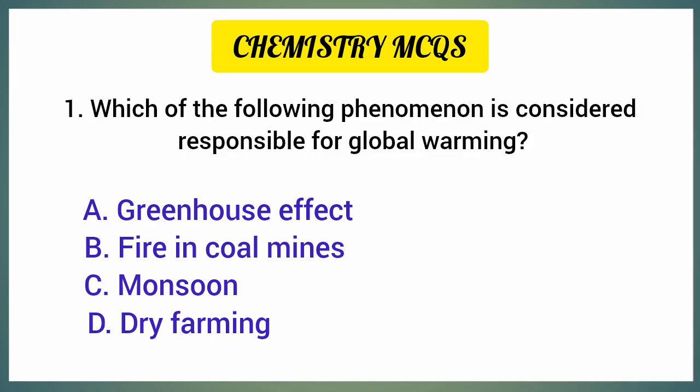Question number one: which of the following phenomena is considered responsible for global warming? The correct option is option A — Greenhouse effect.